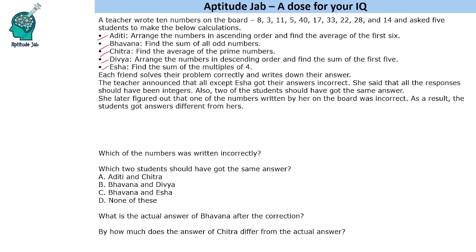Each friend solves their problem correctly and writes down their answer — they did not make a mistake in the calculations. But the teacher announced that all except Isha got their answers incorrect. She said that all the responses should have been integers, and also two of the students should have got the same answer. The teacher later figured out that one of the numbers written on the board was incorrect, so due to one incorrect number, the calculations went wrong for four of the five students.